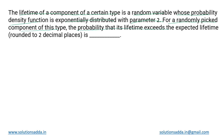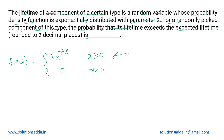For a randomly picked component of this type, the probability that its lifetime exceeds the expected lifetime is to be determined. For exponential distribution, f(x, λ) gives the average probability — in this case the average lifetime — mapped as λ times e raised to minus λx for x ≥ 0, and zero otherwise.